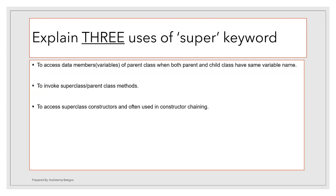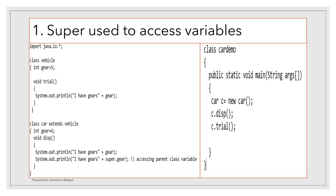There are three uses of the 'super' keyword. First, to access data member variables of the parent class when both parent and child have the same variable name. Second, to invoke superclass methods. Third, to access superclass constructors — this third use is often referred to as constructor chaining.